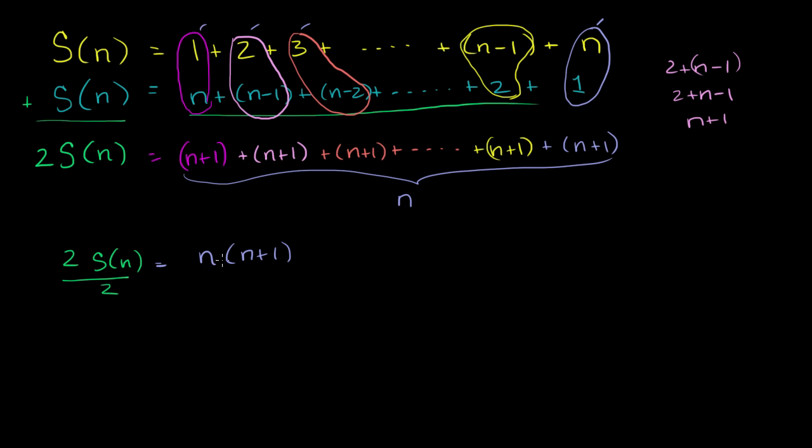So if you divide both sides by 2, we get an expression for the sum. So the sum of all of the positive integers up to and including n is going to be equal to n times n plus 1 over 2. So here is a proof where we didn't have to use induction. It's really kind of a pure algebraic proof.